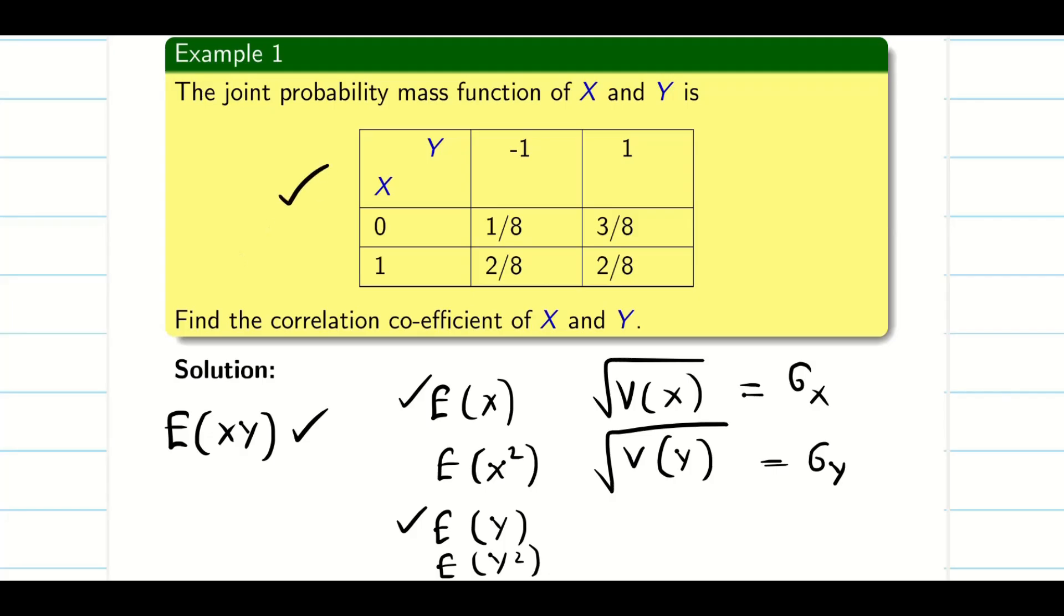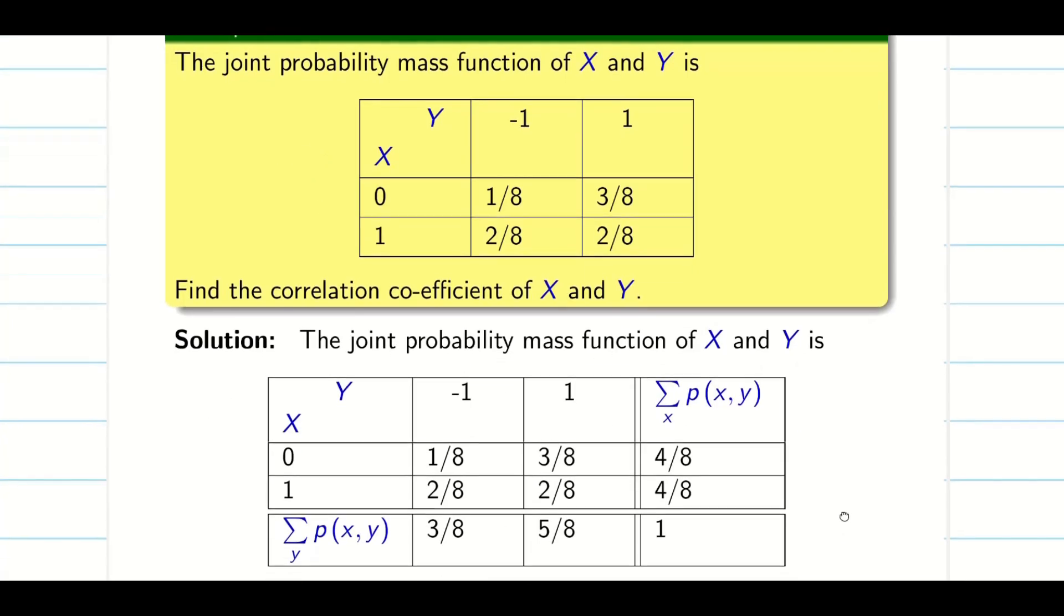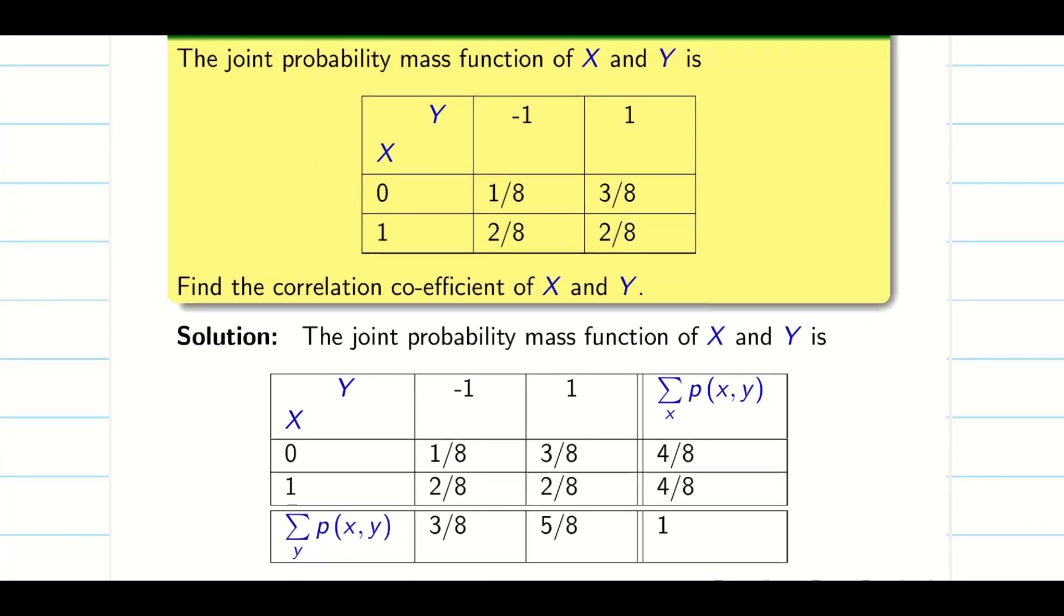Whenever the table is given, always we need to find the row sum and column sum. That is very important. X is given here and Y is given here. Whenever Y is given on top, that means these are the corresponding Y values. Consider this as a column and this is a row.